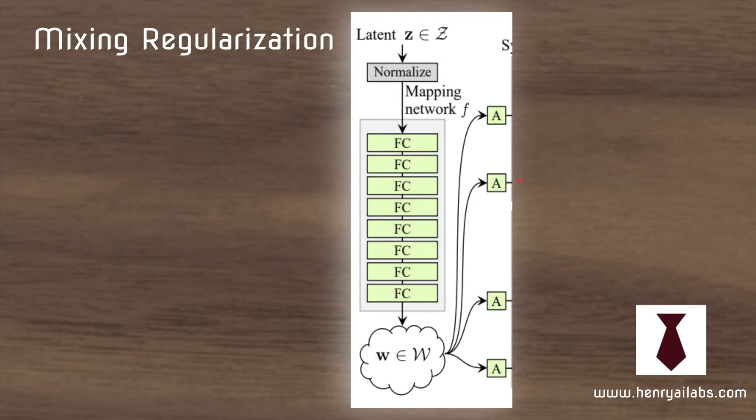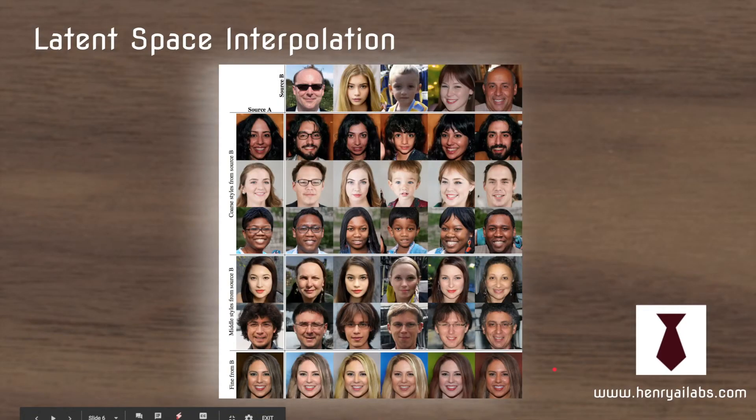So one other idea is mixing regularization and so what this is is you just take sample one vector Z1 and then use it for the first two AdaIN layers and then you take Z2 and use it for the three and four layers. So then the most interesting thing about StyleGAN is its ability to interpolate between generated images. So this tile shows how the two images can be combined in these really interesting ways.